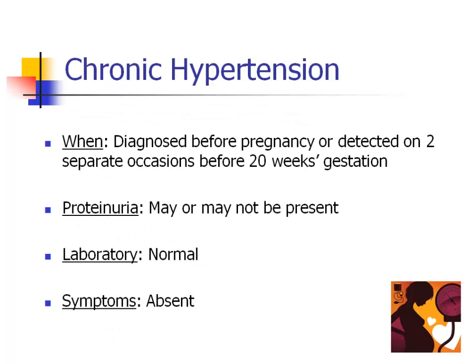The first category we will discuss is chronic hypertension. When women with pre-existing hypertension become pregnant, they are placed into this category. Because many women may not know that they have hypertension before pregnancy, the detection of an elevated blood pressure on two separate occasions before 20 weeks gestation also meets the criteria for chronic hypertension in pregnancy. Chronic hypertension is a cause of kidney damage, so evaluation for the presence of pre-existing proteinuria should be performed. Obtaining a 24-hour urine as early in the pregnancy as possible will establish a baseline amount of proteinuria. Laboratories should otherwise be normal and symptoms are absent.